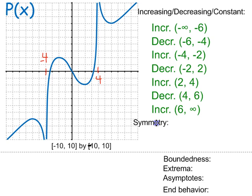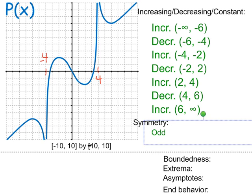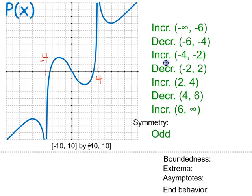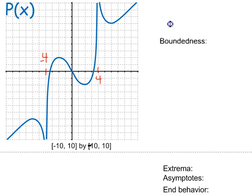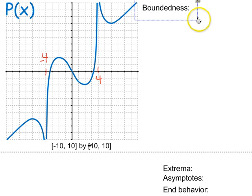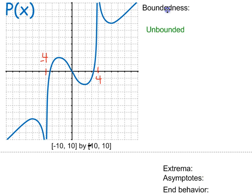Symmetry — we see that this graph is symmetric about the origin, and therefore we would say that this is an odd function. The boundedness — I cannot put a wall above this function to constrain it, I cannot put a wall below the function to constrain it, so I would have to say that this is unbounded.